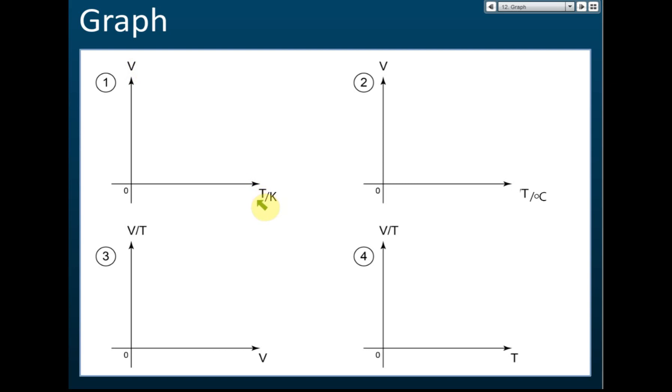The graph is the same. The graph of pressure law and Charles' Law are the same. So if it's Kelvin then it's a straight line passing through the origin. If it's degrees Celsius then it does not pass through the origin. And V over T is always a constant - it's a horizontal straight line.